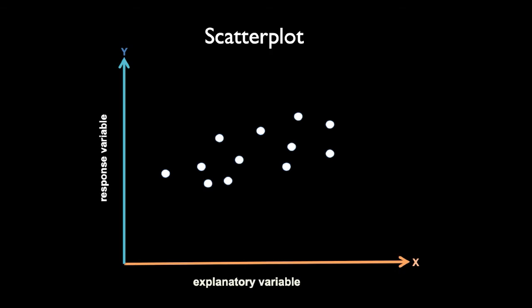When you see a graph with many dots like this, it is called a scatter plot. This graph represents the relationship between x and y. Now let me explain outliers: you see this red dot is a little bit far from the rest of the dots, so this red dot can be an outlier.